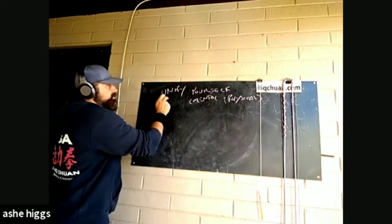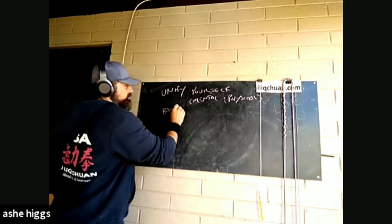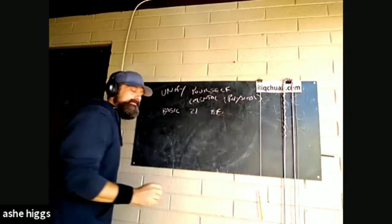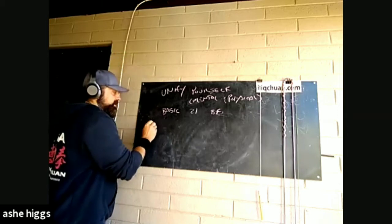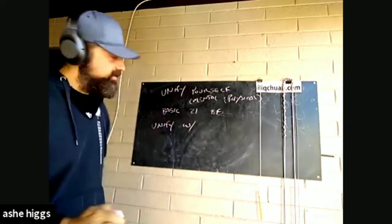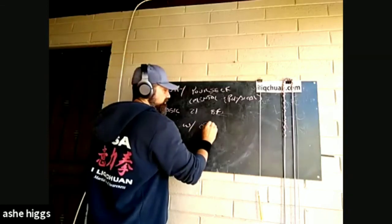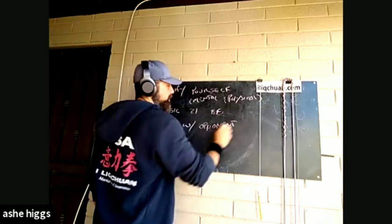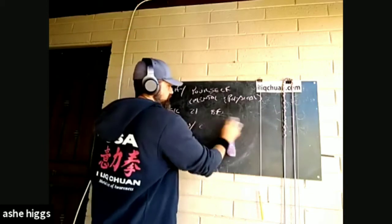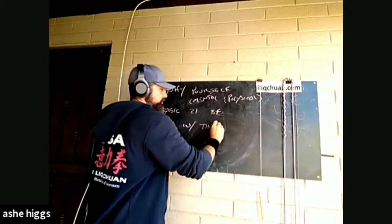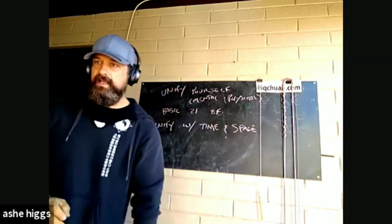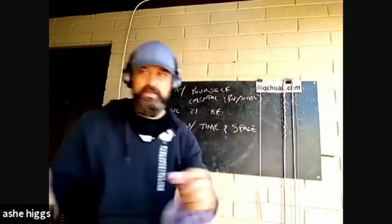But then you're also unifying the physical in the sense that you're balancing the physical. The second step — and this is all basic exercises, the 21 form and the butterfly form — the second step of training is to unify with everything else. So we start by saying with the opponent. But really, what does the opponent represent? The opponent represents time and space.